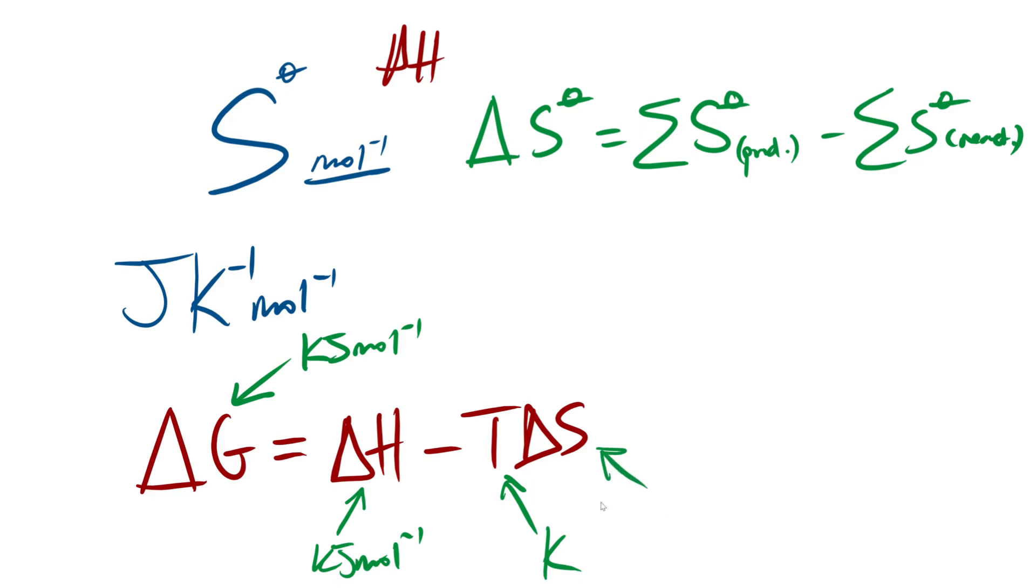So these two are balanced out, that's all good to go. Temperature, chemistry loves kelvins, so it's going to be kelvin. Delta S, what's that going to be? We just spoke about that here. The units of entropy is in joules per kelvin per mole. So if I write that again, our entropy change is going to be exactly the same, joules per kelvin per mole.